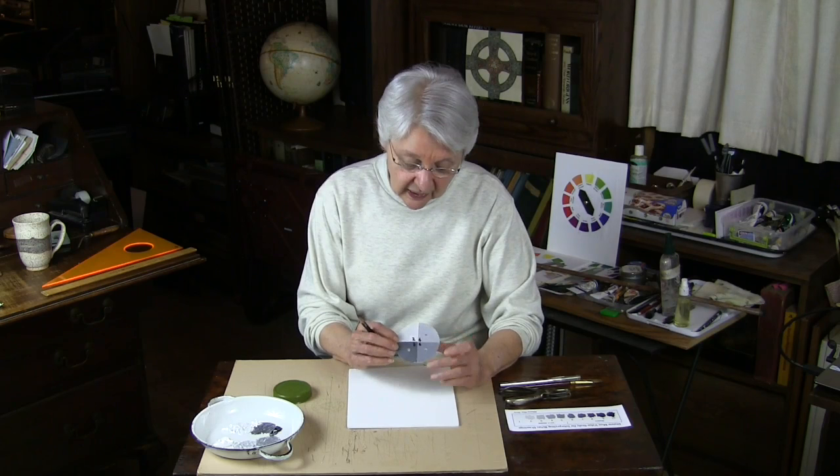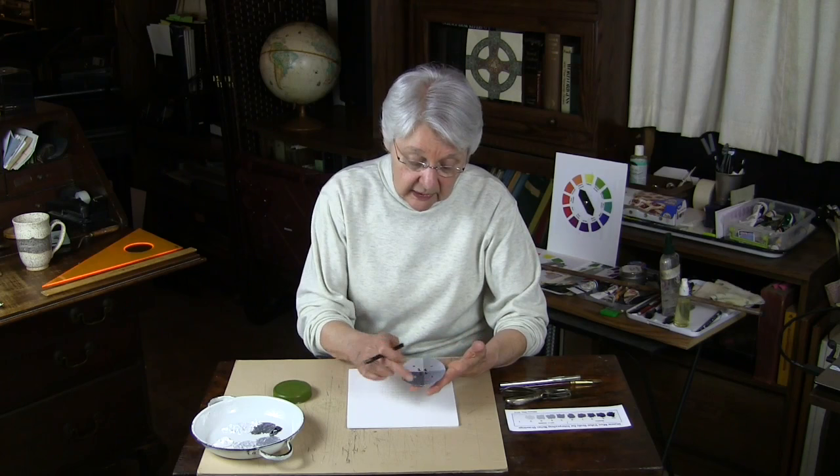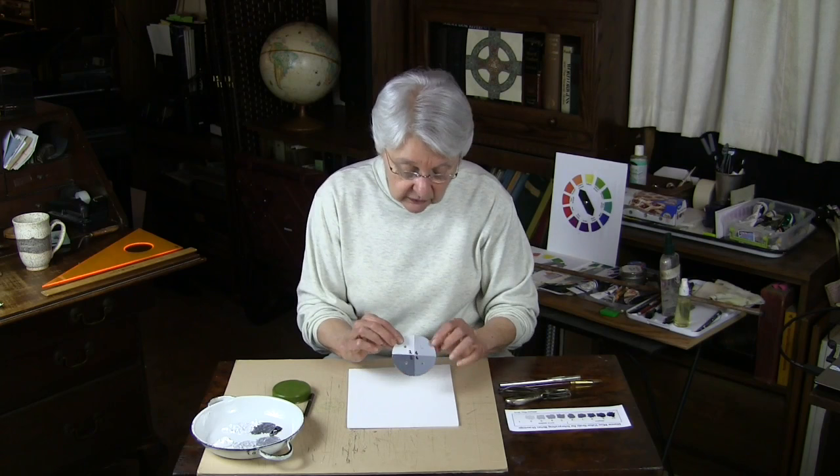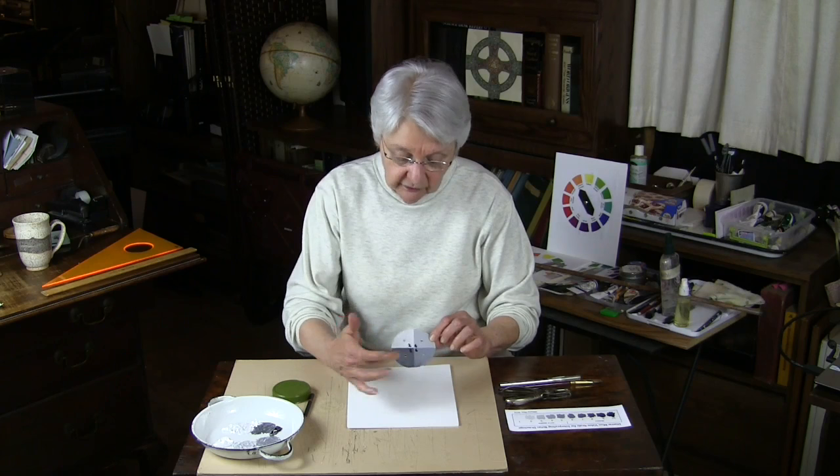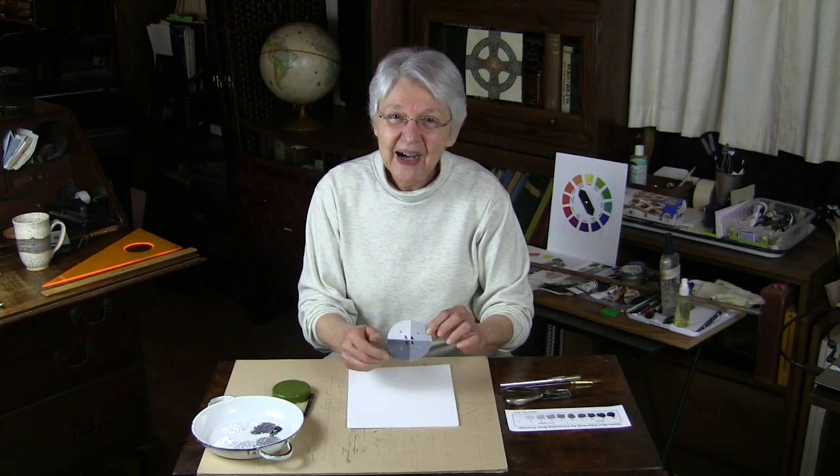He calls it a value wheel and what he's done here, he invented this on canvas. It can be done on cardboard or any material that's sturdy. Simply divide a disc into four parts and paint them with values two, four, six, and eight. You see what that does, it gives you value areas, general areas for in shadow and not in shadow.